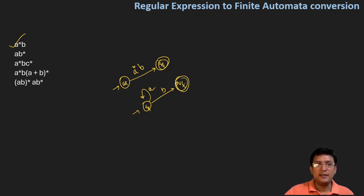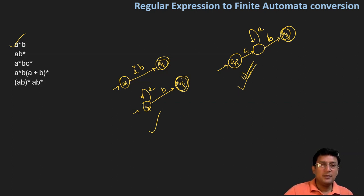To expand and show a*, you can have initial state with epsilon transition to a state where there's an a self-loop, then epsilon transition to another state. From there, b symbol takes you to the final state. You can design the closure this way.